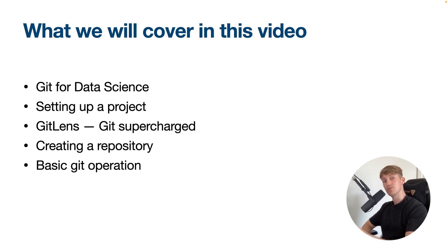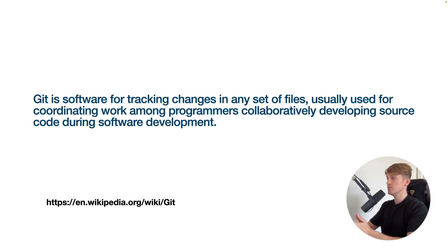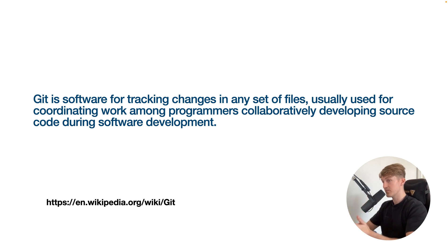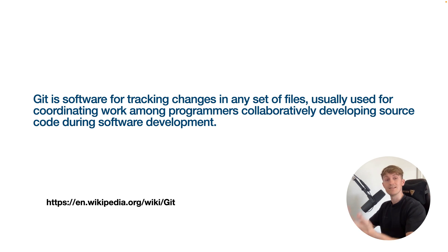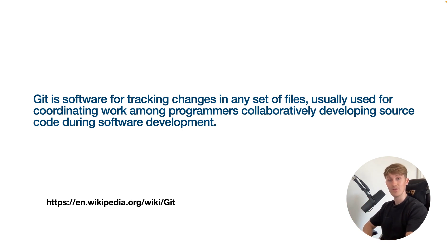This will not be an in-depth guide on how to use Git, but more a guide on how to use Git within VS Code. For those of you that don't know, Git is software for tracking changes in any set of files, usually used for coordinating work among programmers collaboratively developing source code. We as data scientists also write code, so we also want to keep track of our changes and share code with others.